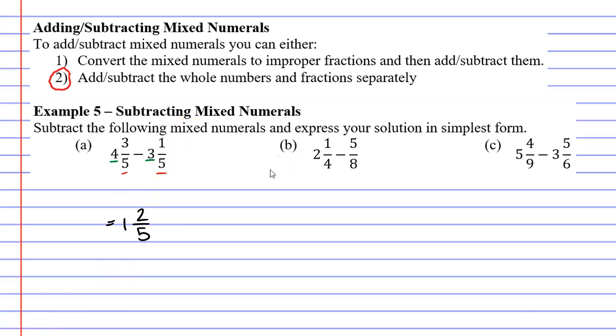Now moving on to question B. Remembering that we start by subtracting the fractions. Now you'll notice that the fractions have different denominators. One has a denominator of 4 and the other has a denominator of 8. To fix this I'm going to change the fraction 1 over 4 and I'm going to multiply both the top and the bottom by 2. 1 times 2 is 2 and 4 times 2 is 8. Now both fractions have the same denominator of 8. Remembering that I need to write my whole number of 2 next to the fraction 2 over 8.